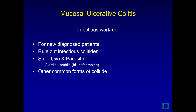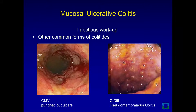Any patient presenting with colitis must be worked up to rule out infectious colitis. Stool ova and parasites must be ruled out, specifically Giardia lamblia, usually found in persons who have recently been hiking or camping. Other common forms include cytomegalovirus colitis — showing punched-out ulcers characteristic of CMV — and pseudomembranous colitis in Clostridium difficile, which must also be ruled out.